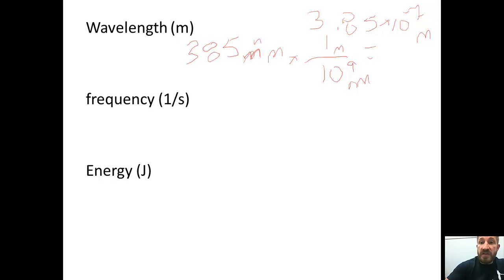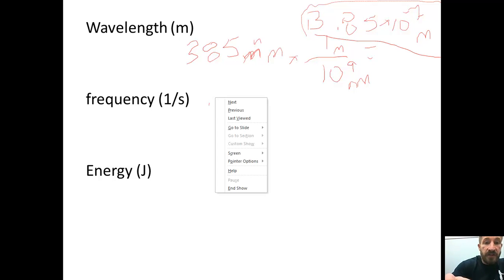Now we're going to use this number, this value right here, to help us calculate the frequency. So the frequency, we're going to use the formula, which is speed of light, c, is equal to wavelength times frequency. We know the speed of light is 3.0 times 10 to the 8th meters per second.